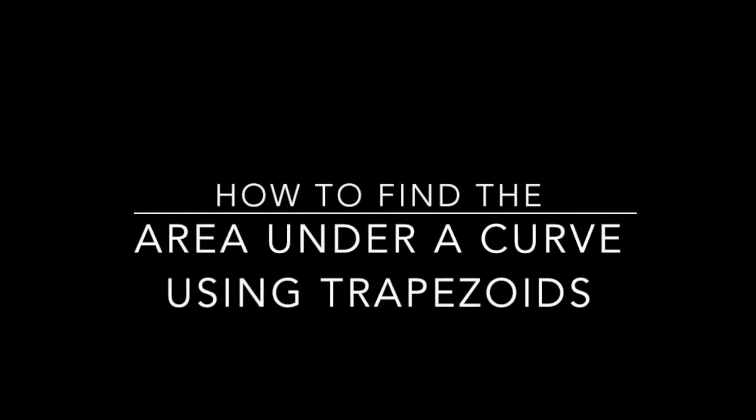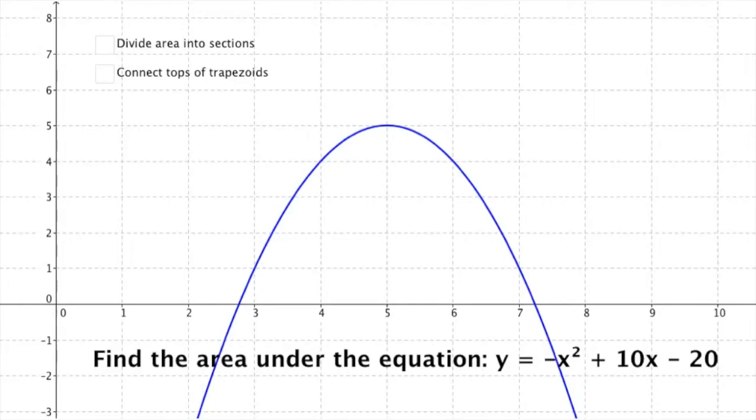This is the extension video for Unit 8. We're going to be finding the area under this equation, this curve, y equals negative x squared plus 10x minus 20.